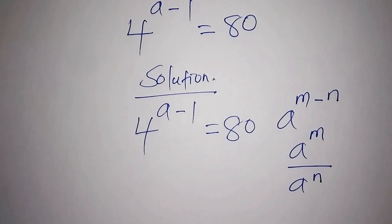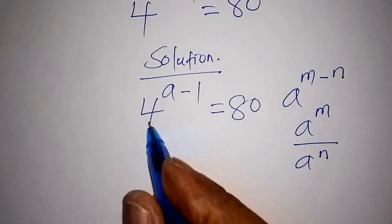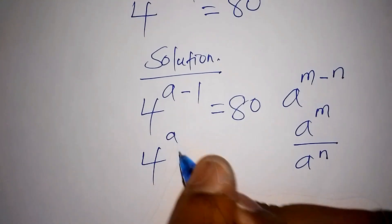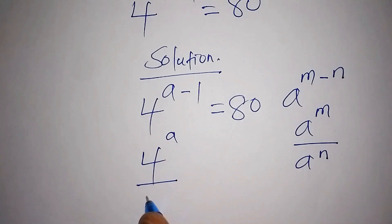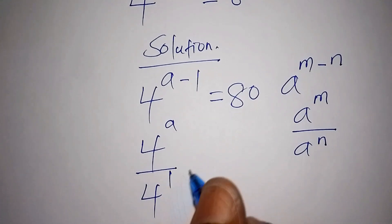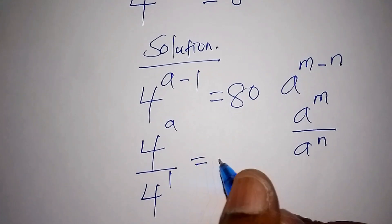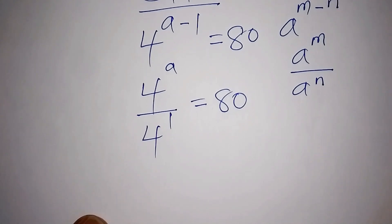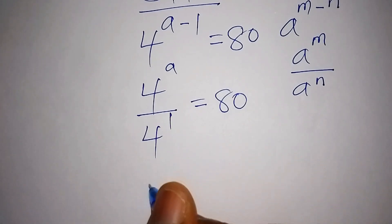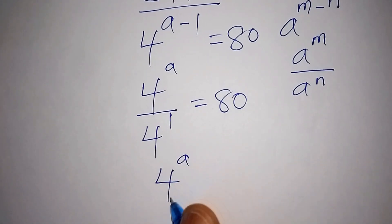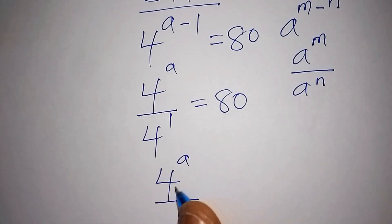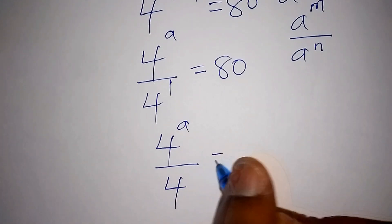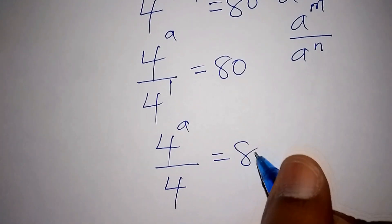Using that formula, we can now work it out by rewriting the expression. We now have 4 to the power of a all over 4 to the power of 1 equals 80. So 4 to the power of a divided by 4 equals 80.